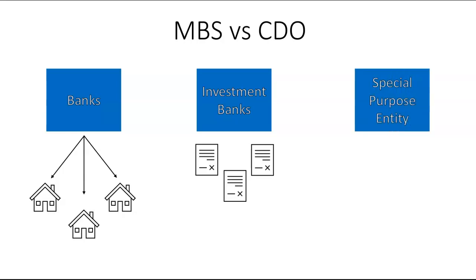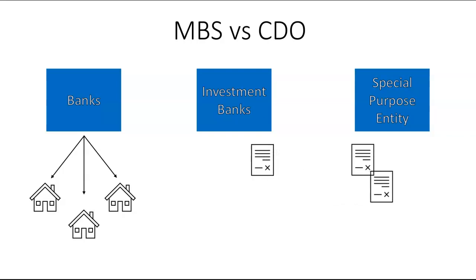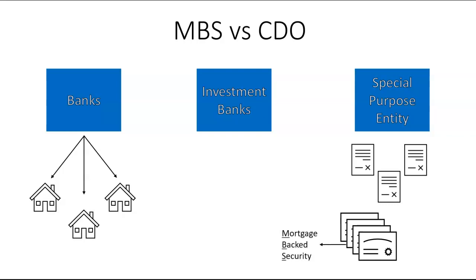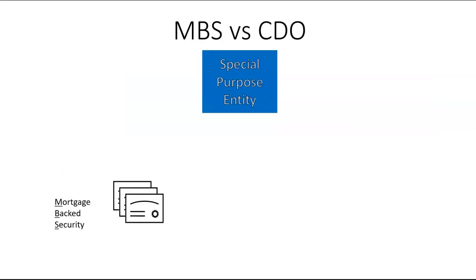The investment bank would give investors a piece of this action by creating something called a special purpose entity — basically a shell company, a holding company to hold a new type of asset. The investment bank transferred the mortgages into the special purpose entity (SPE), where the mortgages are bundled and controlled. The shell company can then issue stock giving shareholders a share of the revenue generated by these mortgages. This is what we call a mortgage-backed security.